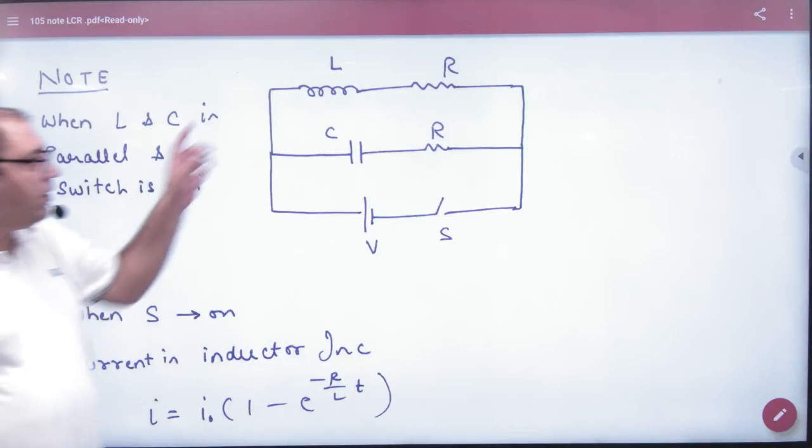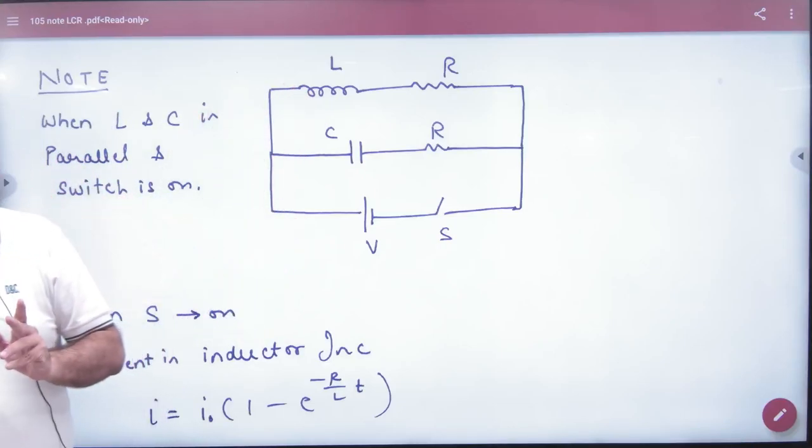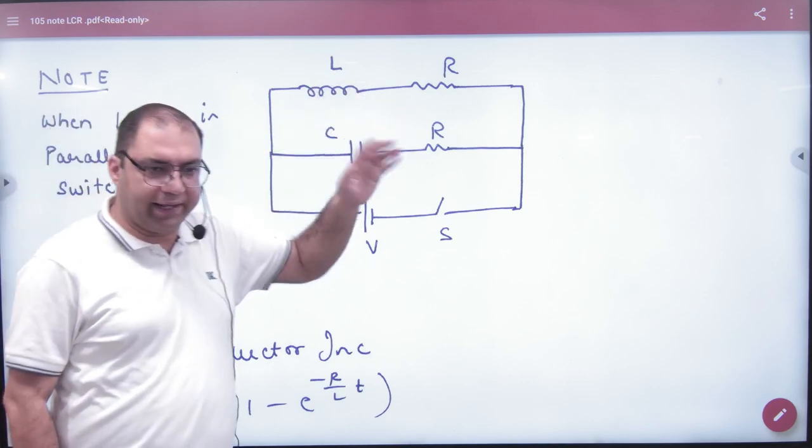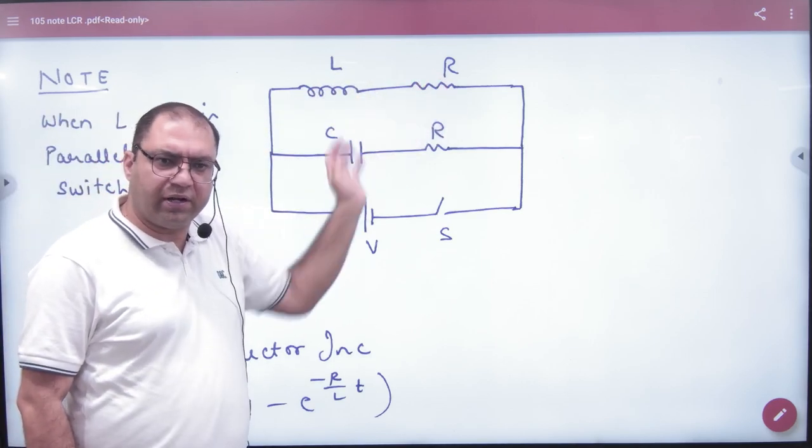So when L and C are parallel, and R is connected, LR is inductor with resistor and capacitor with resistor is parallel.